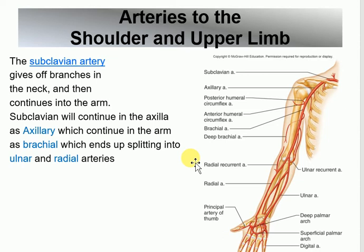Under the clavicle: subclavian. Into the axilla: axillary. Into the brachium: brachial. Into the radius: radial. Into the ulna: ulnar. So the subclavian becomes the axillary, which becomes the brachial, and the brachial splits into the radial and ulnar. The radial artery is the one used for palpating the pulse, as we covered in the pulse points.